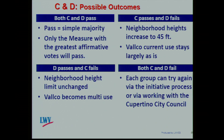Here's the grid for what happens with these two measures. If they both pass, they are sufficiently in conflict that only the measure passing with the greatest number of affirmative votes will actually pass — the other will act as if it failed. If C passes and D fails, neighborhood heights will increase to 45 feet and Valco's current use will stay largely as it is now. If D passes and C fails, neighborhood height limit is unchanged and Valco becomes multi-use. If both C and D fail, either group can try again using the initiative process or working with the Cupertino City Council.